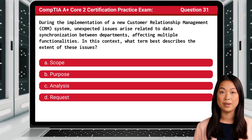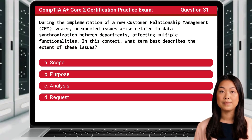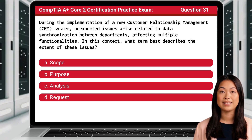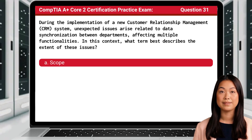Question 31. During the implementation of a new customer relationship management system, unexpected issues arise related to data synchronization between departments, affecting multiple functionalities. In this context, what term best describes the extent of these issues? The answer is A: Scope.